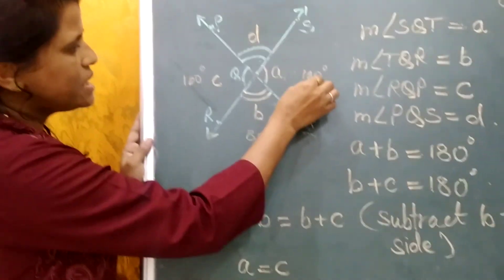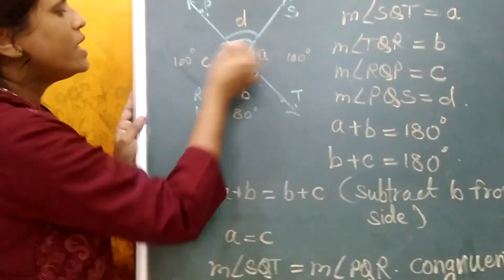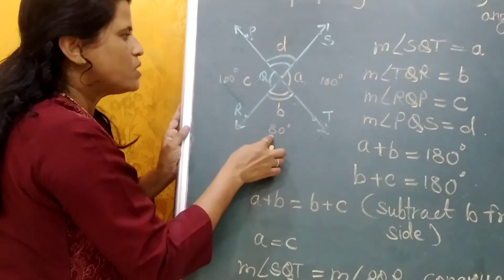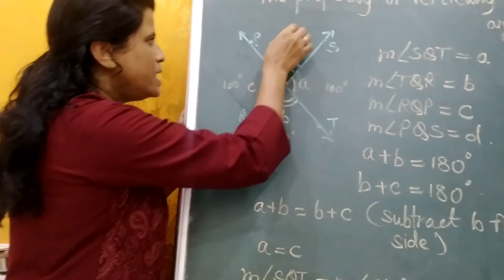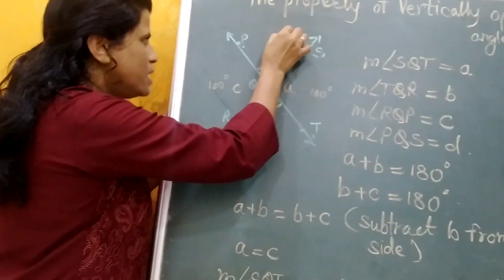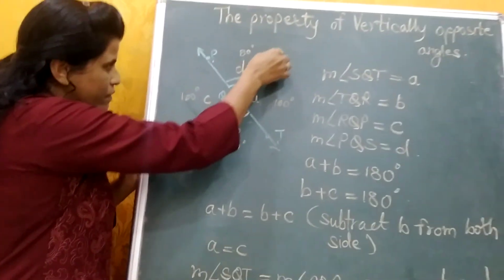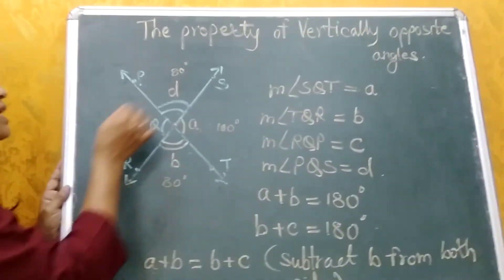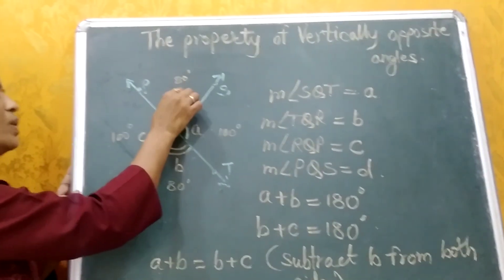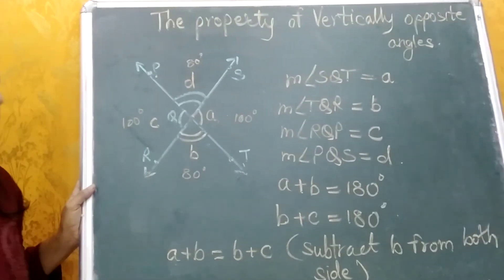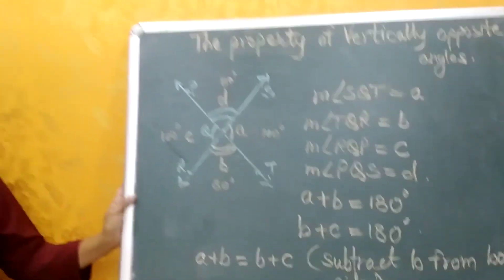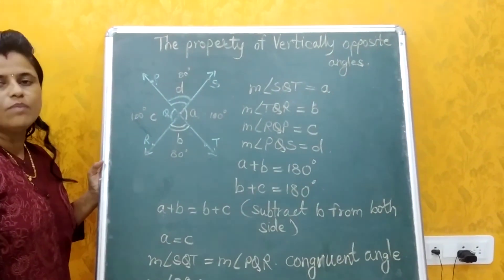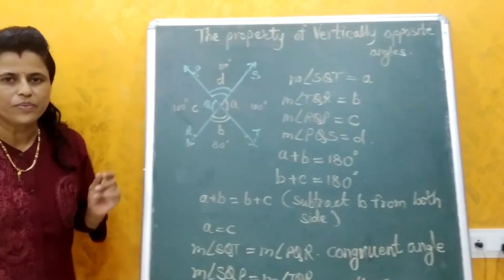See here, if A is 100 degrees, then C is also 100 degrees. And if B is 80 degrees, then D is also 80 degrees. This is the property of vertically opposite angles. Thank you.